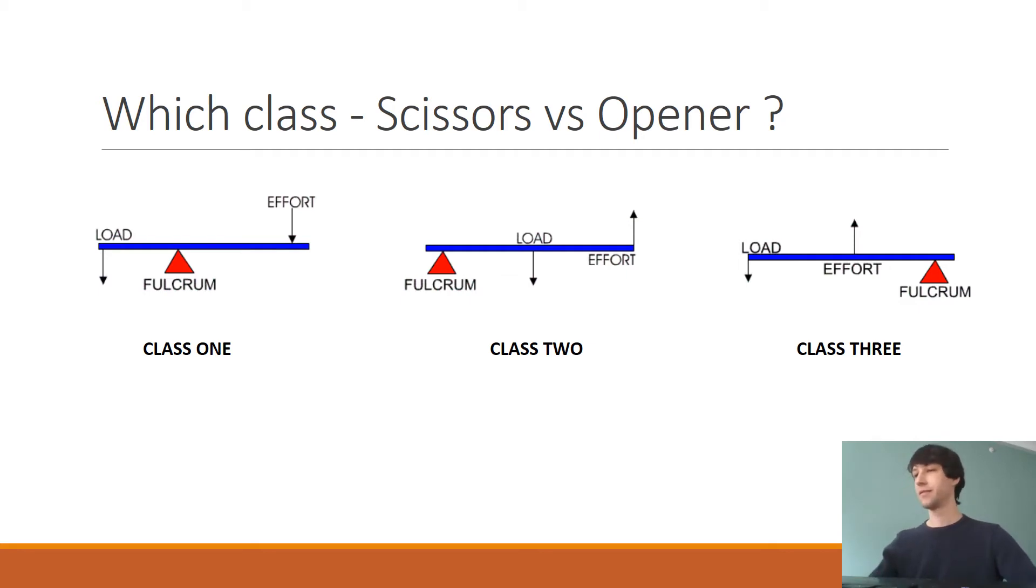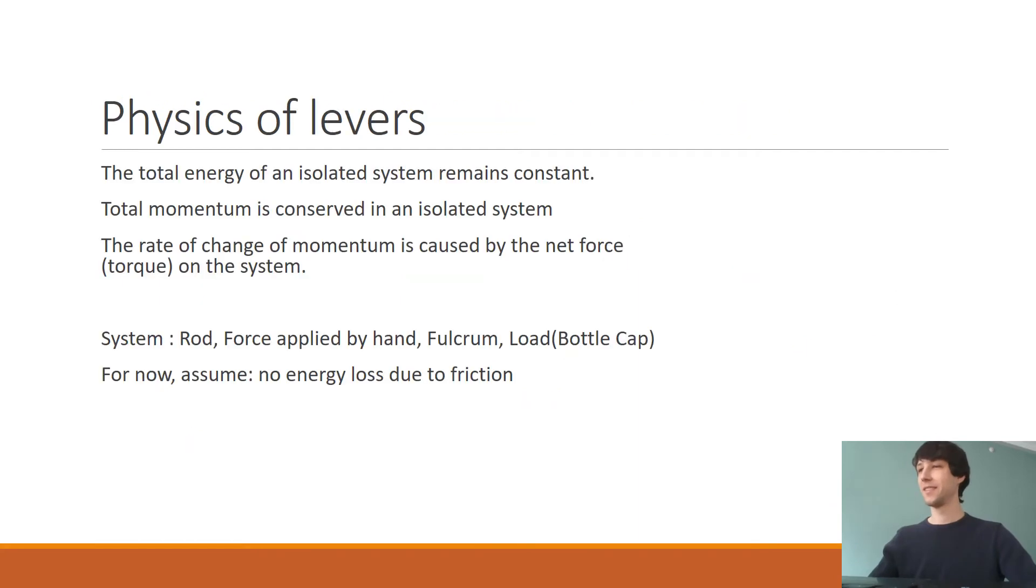All right, now we're moving on to the best part. The physics of levers. Despite the fact that the classes of levers are different, the underlying principle is still pretty much the same. It's the laws of physics governing all of it. The total energy of the isolated system remains conserved, the momentum of the isolated system remains conserved, and the rate of change of momentum is caused by the net force on the system. These are, in fact, different ways of looking at Newton's second law in an isolated system. I keep saying the word system, so I'll define it.